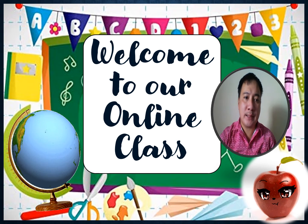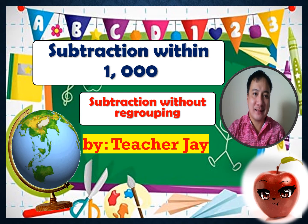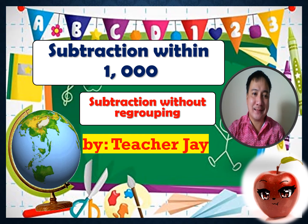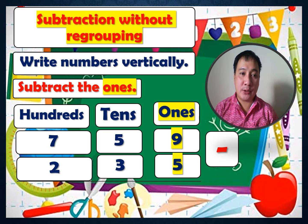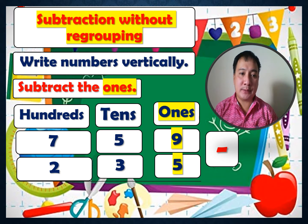Hello everyone, it's Teacher Jay. Welcome to our online class. Our lesson for today is all about subtraction within 1000 — subtraction without regrouping, meaning no carrying. Write numbers vertically. Our example is 759 minus 235.